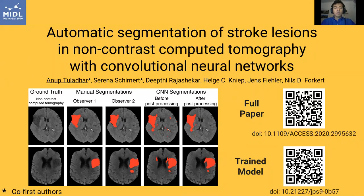In our short paper, Automatic Segmentation of Stroke Lesions in Non-Contrast Computed Tomography with Convolutional Neural Networks, we describe an automated CNN to segment non-contrast CT images of follow-up stroke lesions. Our trained model generalized well to an out-of-distribution test set, and lesion volume estimates were in excellent agreement with expert raters.